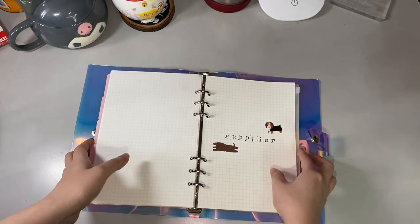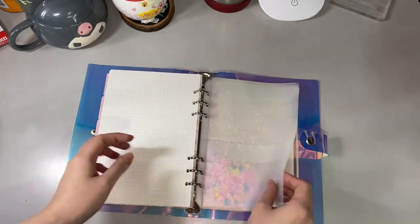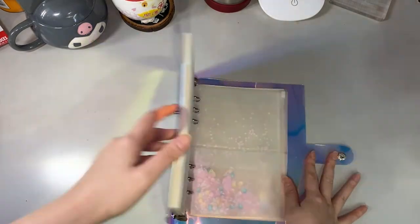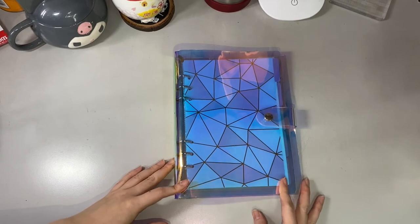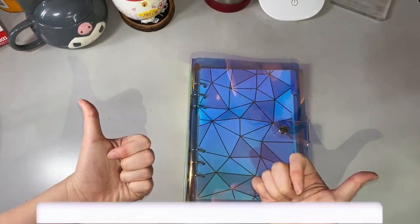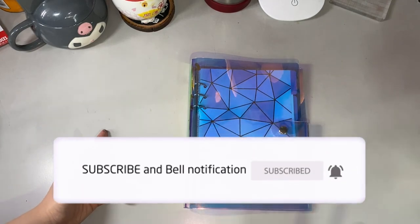So here's the finished setup of my business journal using the six-ring binder. And that's it, thank you for watching. Please give this video a thumbs up and please subscribe to this channel. Bye bye!